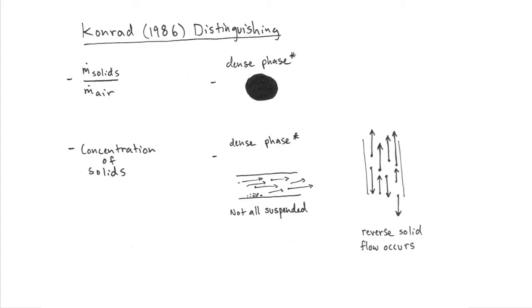It is very hard to confidently distinguish between the two phases, but there are good observations and characteristics that set them apart. Conrad said that dilute and dense phase transport could be distinguished by analyzing the mass flow rate of solids compared to the mass flow rate of air, and the concentration of solids in the stream.